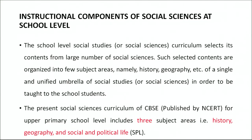Let us look into instructional components of social sciences at school level. The school level social studies curriculum selects its contents from a large number of social sciences — we can call it an umbrella field. Such selected contents are organized into a few subject areas namely history, geography, political science, etc. The present social science curriculum of CBSE, published by the National Council for Educational Research and Training for upper primary school level, includes mainly three subject areas: history, geography, and social and political life.